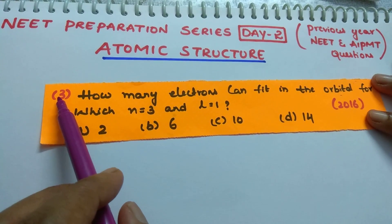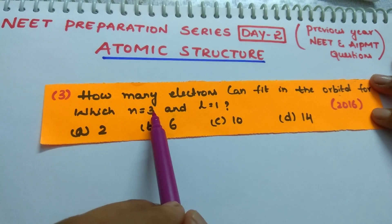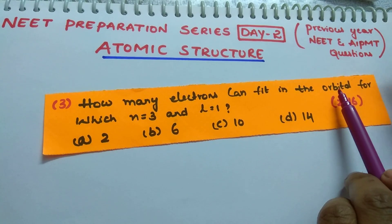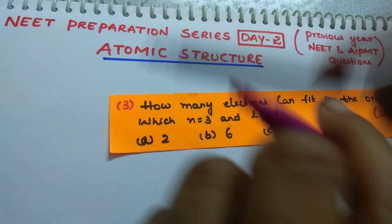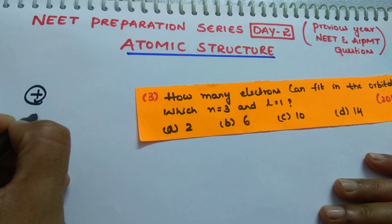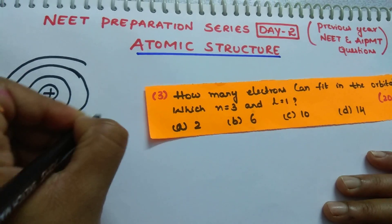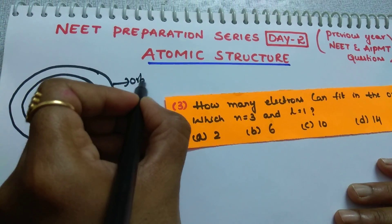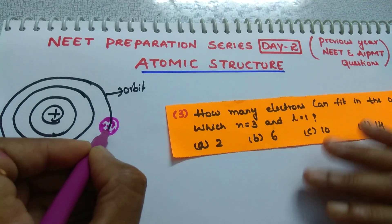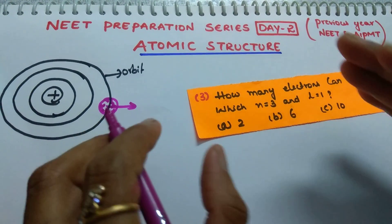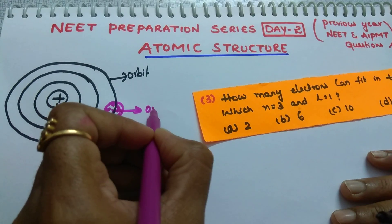See the question. I am going to start from the third question. How many electrons can fit in the orbital for which n=3 and l=1? Here they are asking about an orbital. What is an orbit, students? For example, this is a nucleus — the path or place where the electron is revolving is called an orbit. In this path, the electron is revolving, and the region where there is maximum probability, or where the electron spends maximum time, is called an orbital.